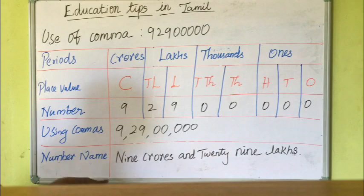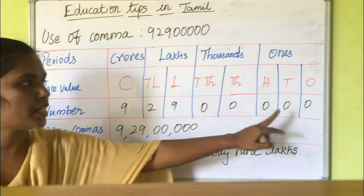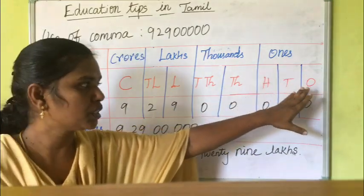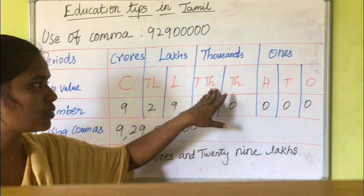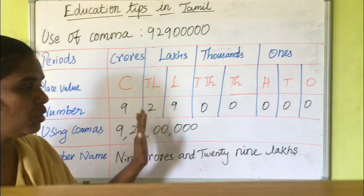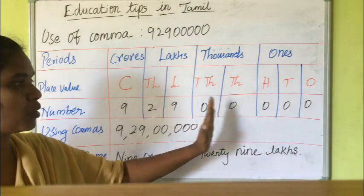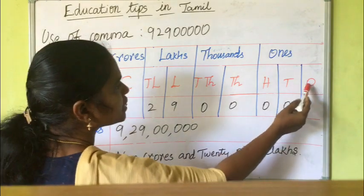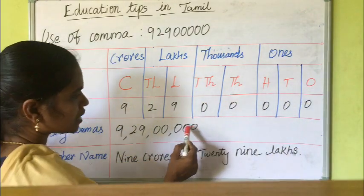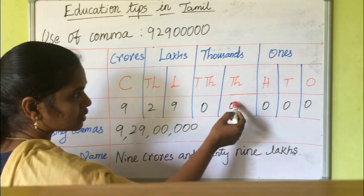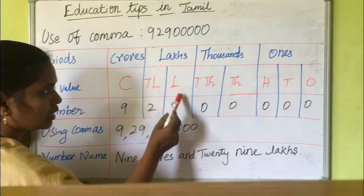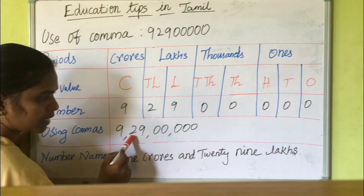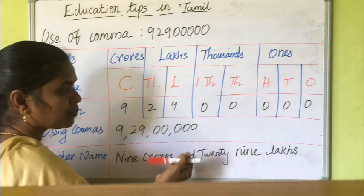One column is given. So separately, we have the ones term, thousands term, and lakhs term. Under ones: ones, tens, hundreds. Under thousands: thousands, ten thousands. Under lakhs: lakh, ten lakh. And crore. We place the digits and separate them with commas: ones comma, thousands comma, lakhs comma, crore.